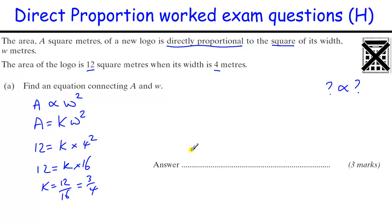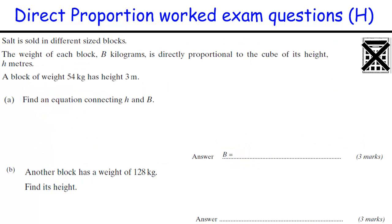That equals 3 over 4, or 3 quarters. So the final equation, we replace K with the value of 3 quarters. You could write it as a decimal, 0.75W squared, but 3 quarters is in my opinion neater.